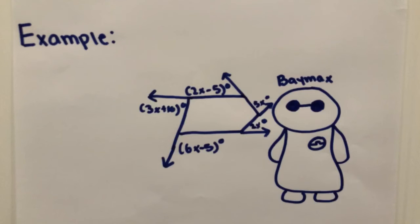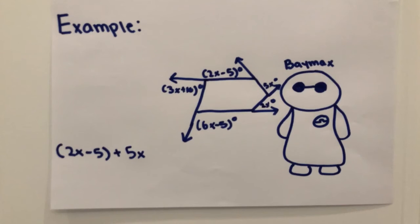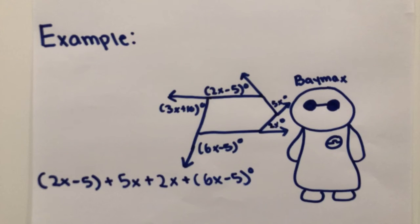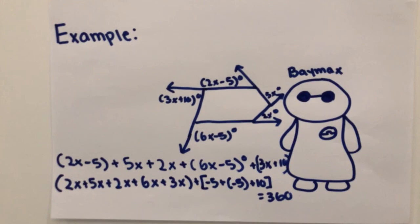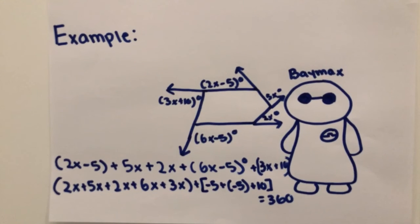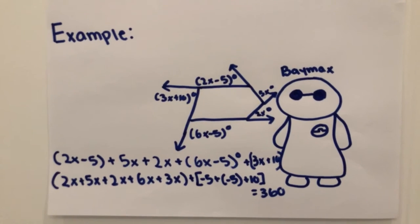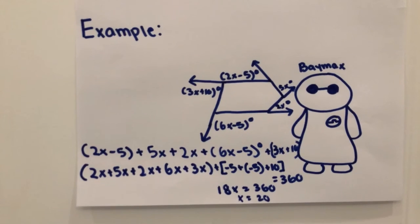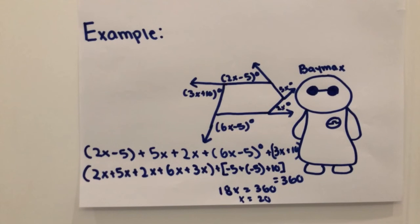Here's an example. Measurement 1 is 2x minus 5, measurement 2 is 5x, measurement 3 is 2x, measurement 4 is 6x minus 5, and measurement 5 is 3x plus 10, all equal to 360. Then you get 2x plus 5x plus 2x plus 6x plus 3x plus negative 5 plus negative 5 plus 10, which equals 360. Then you get 18x equals 360, and x equals 20. You can find the measurement of each angle by plugging in x. This is why the concept of finding the interior and exterior angle sum is the most important.